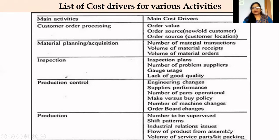For inspection, cost drivers include inspection plans, number of problem suppliers, gauge usage, and lack of good quality. For production control, cost drivers are engineering changes, supplier performance, number of parts operational, make versus buy policy, number of machine changes, and order board changes.